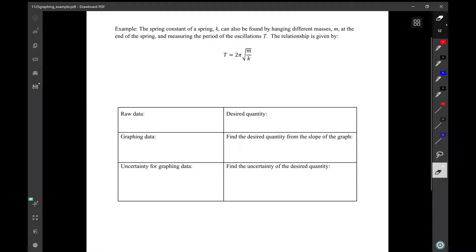Let's see how to do the questions in our problem 1 through this example. Your first step is to read the question to understand what the experiment is. So here it says the spring constant of a spring k can also be found by hanging different masses m at the end of the spring and measuring the period of the oscillations T. The relationship is given by this equation.